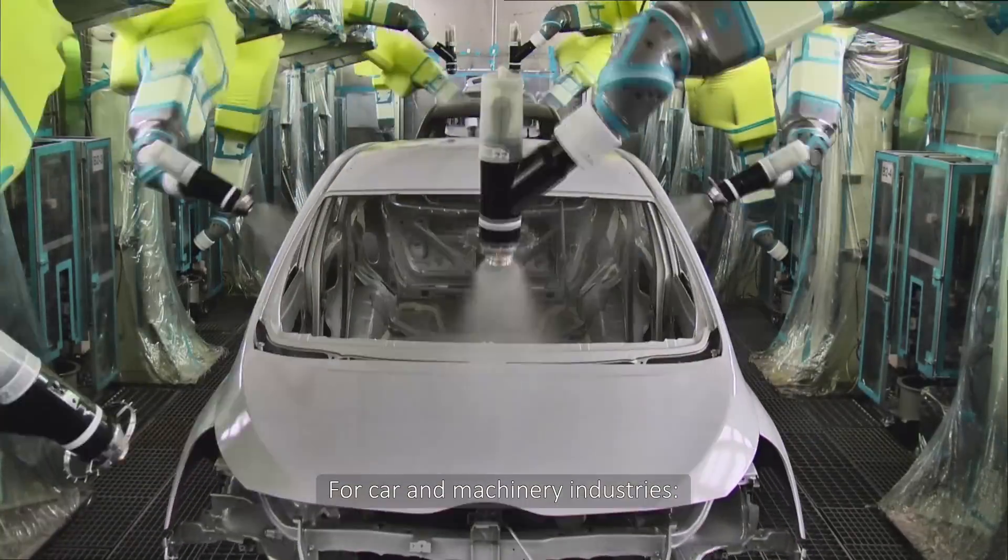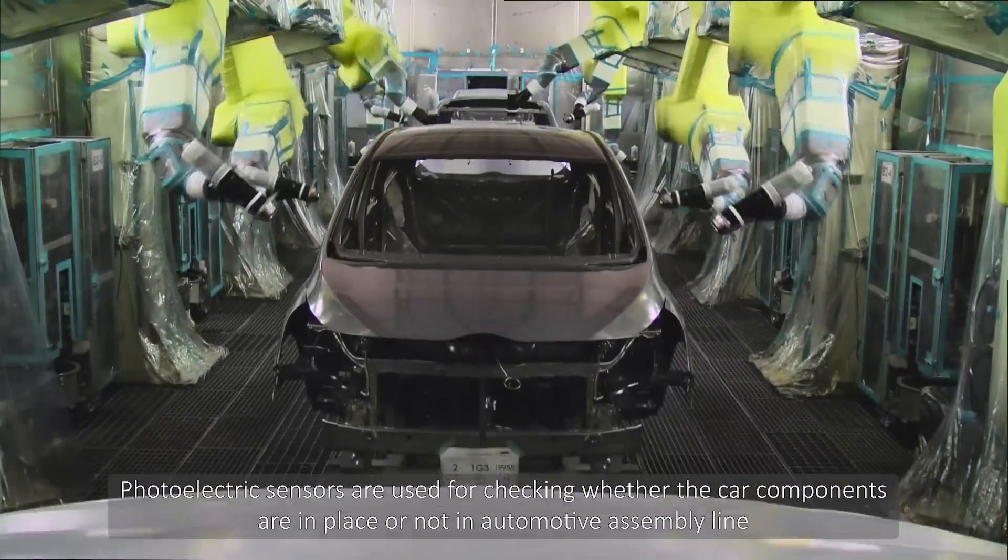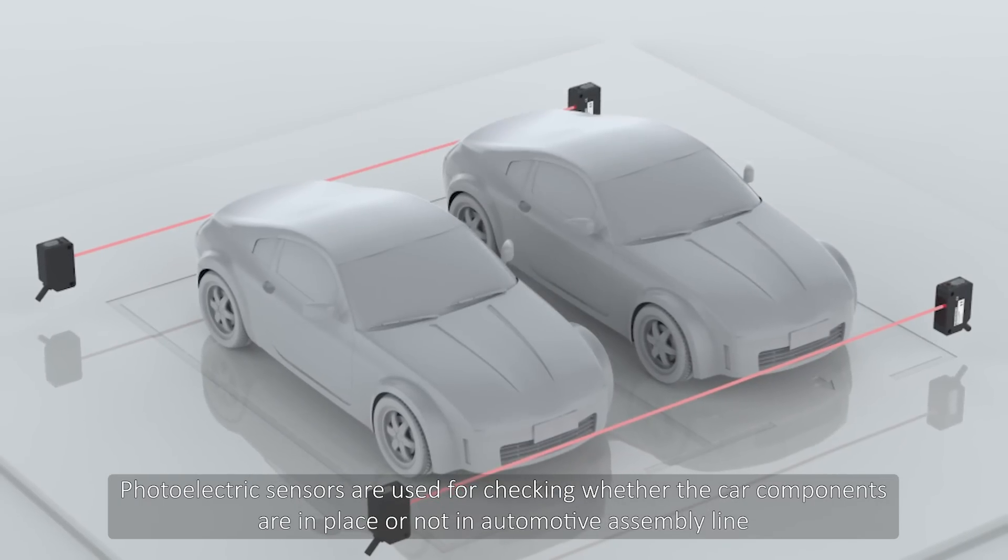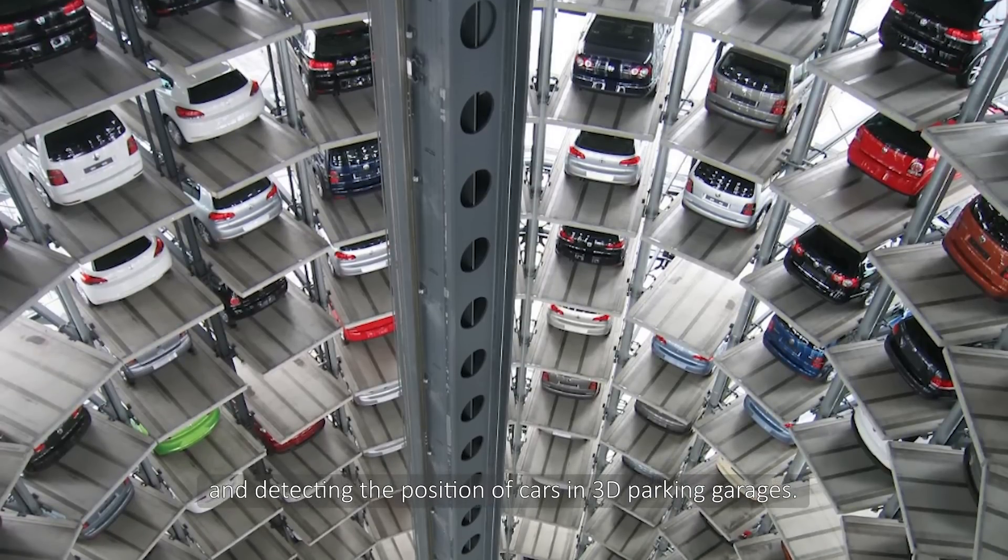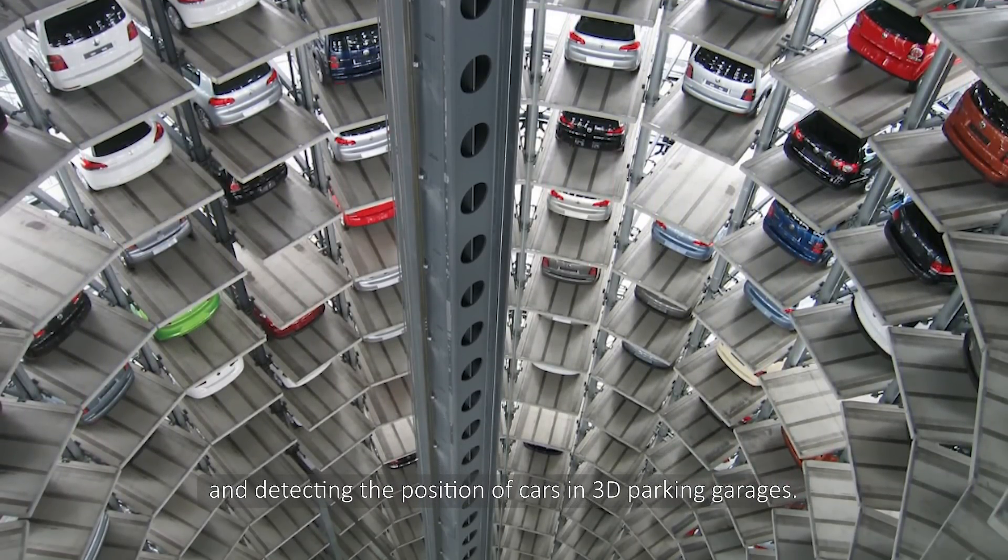For car and machinery industries, photoelectric sensors are used for checking whether the car components are in place or not in automotive assembly line and detecting the position of cars in 3D parking garage.